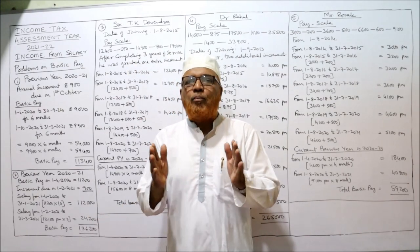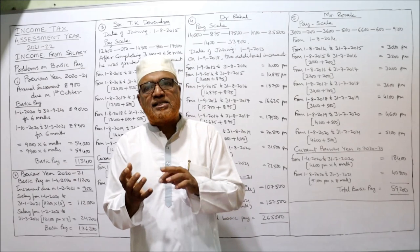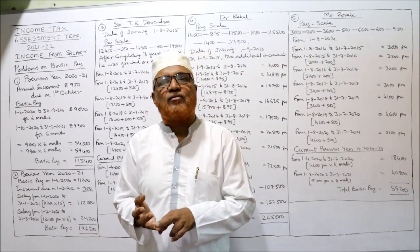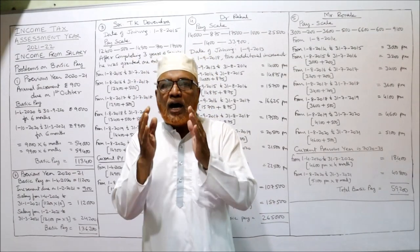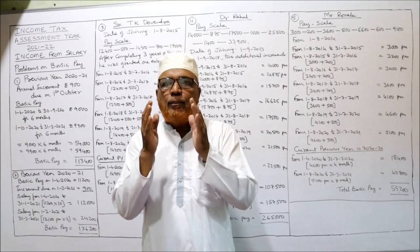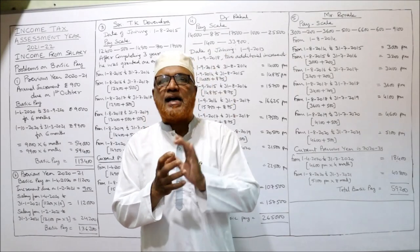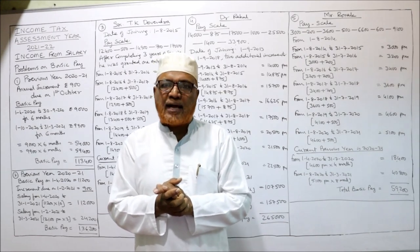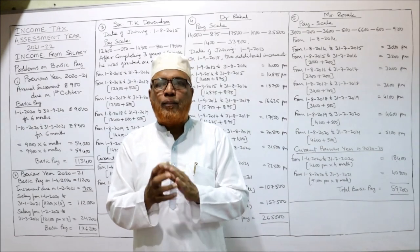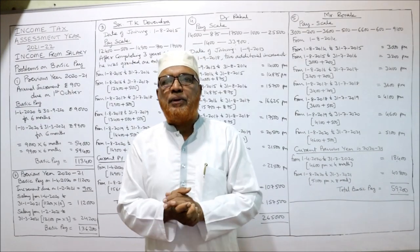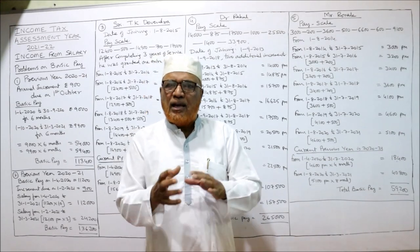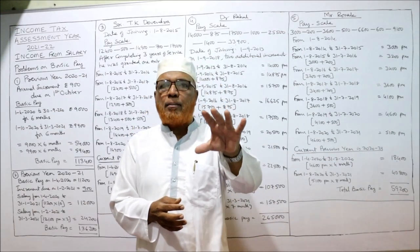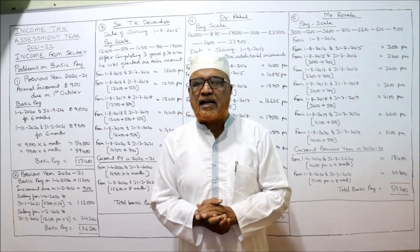I also covered the different components of salary, like salary, allowances, perquisites, and profits in lieu of salary. Then I covered what are the items that may come under the head salary — that means basic pay, wages, pension, gratuity, employer's contribution to RPF in excess of 12%, and many other such items that may come under the head salary.